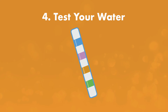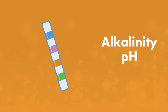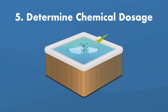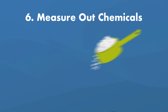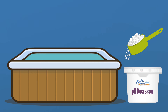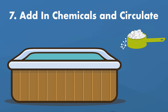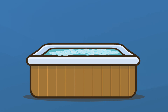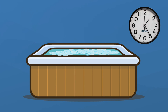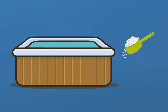Before you add any chemicals, test the water using test strips or a liquid test kit. Focus on alkalinity and pH first — if those are out of whack, the sanitizer can't do its job. Next, determine how much of each chemical you'll need by referring to the manufacturer's instructions, then measure them out carefully. You don't want to pour chemicals straight from the container — balanced water requires precision. Finally, pour the measured chemicals straight into the hot tub water and walk away. The jets will mix everything up. Leave it for at least 15 minutes, then cover your hot tub to prevent evaporation. Before you get in, test the water again to make sure levels are where they need to be — and if they're not, repeat the process.